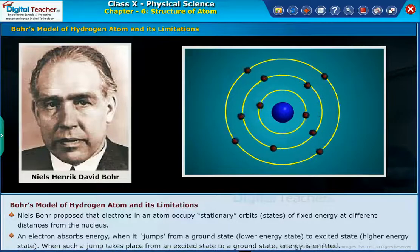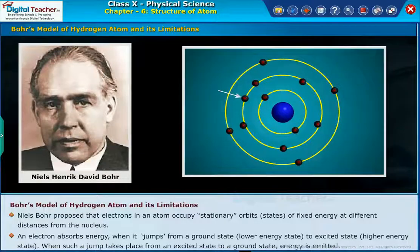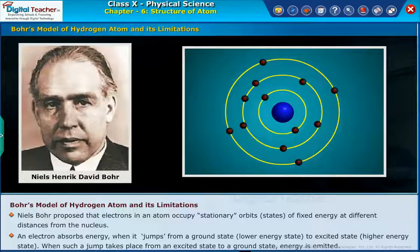An electron absorbs energy when it jumps from a ground state to excited state. When such a jump takes place from an excited state to a ground state, energy is emitted.